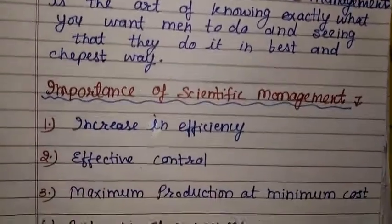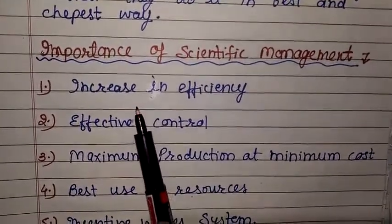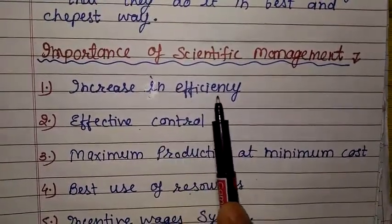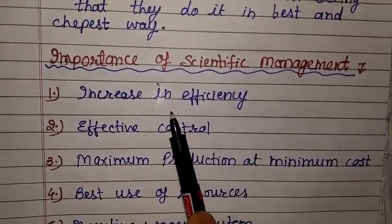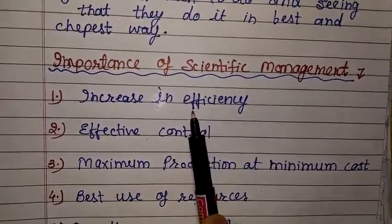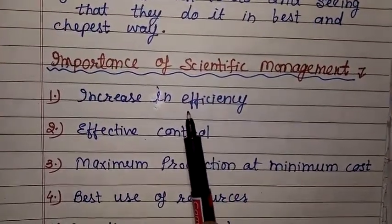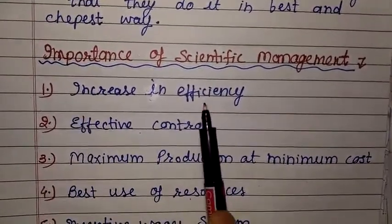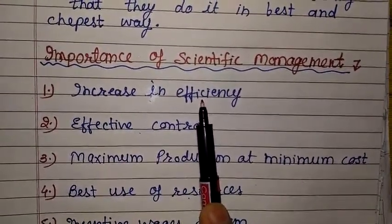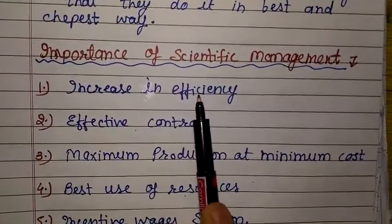Now, what is the importance of scientific management? First of all, increase in efficiency. Scientific management is helpful in increasing the efficiency of workers and managers. The workers are controlled in a systematic way and a number of work studies are made on them — different types of work studies like time study, motion study, method study, and fatigue study — so we can use manpower at its maximum capacity and increase their efficiency.